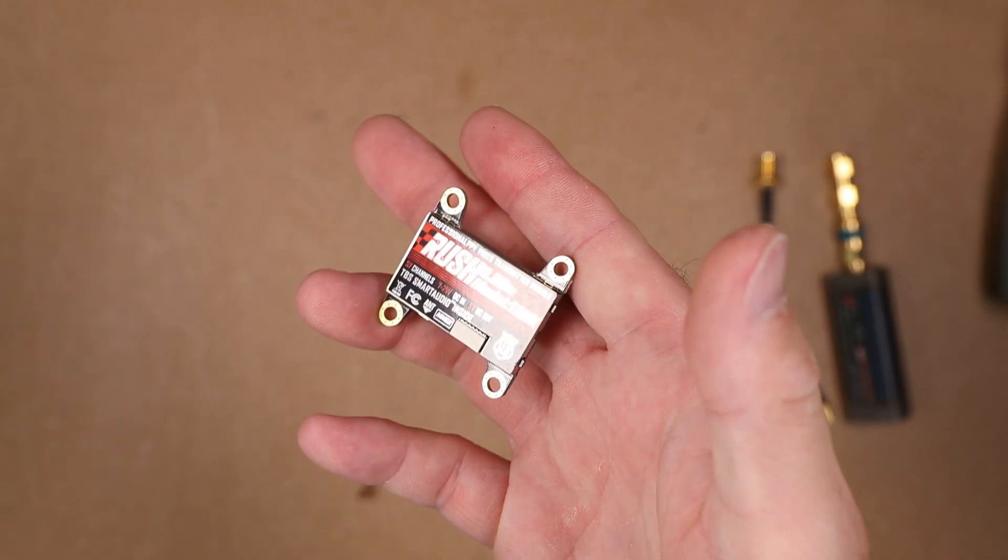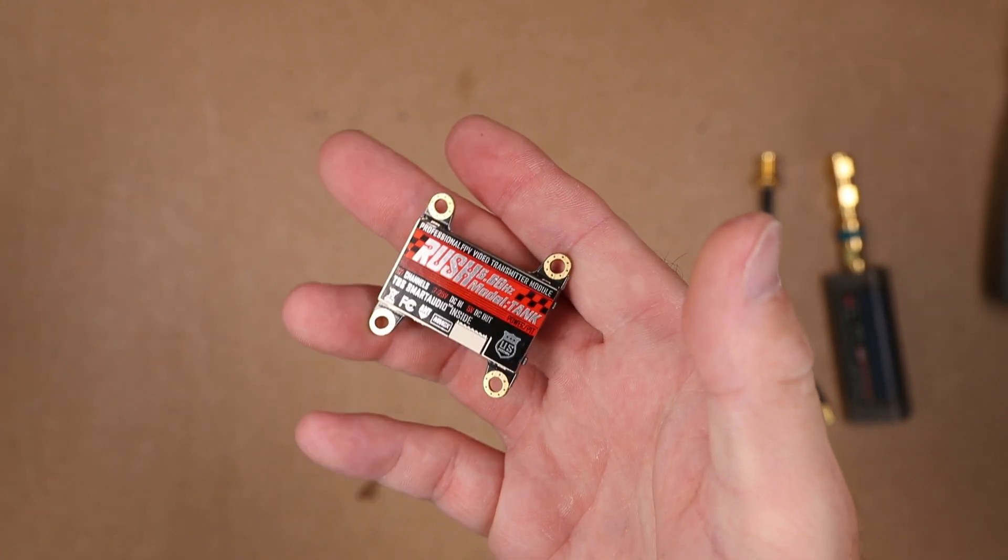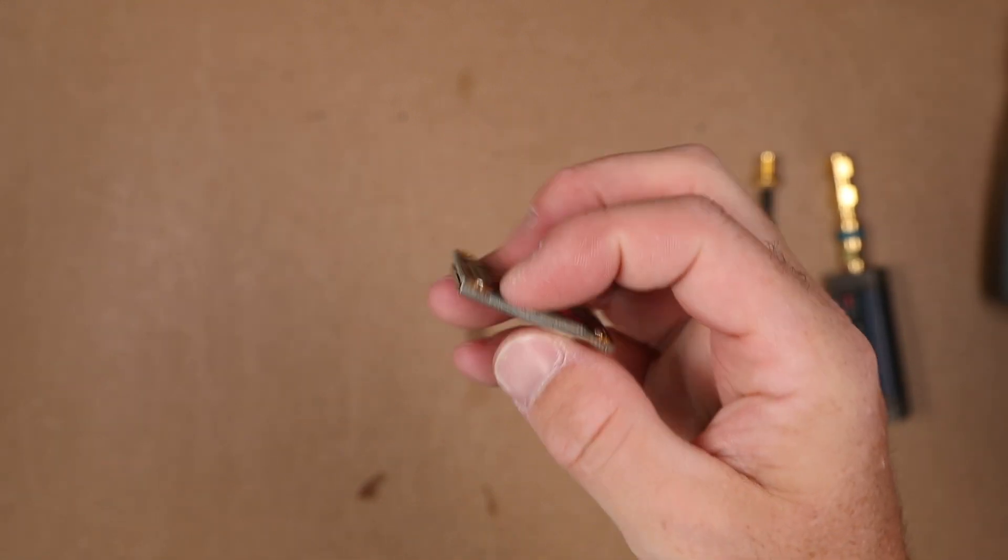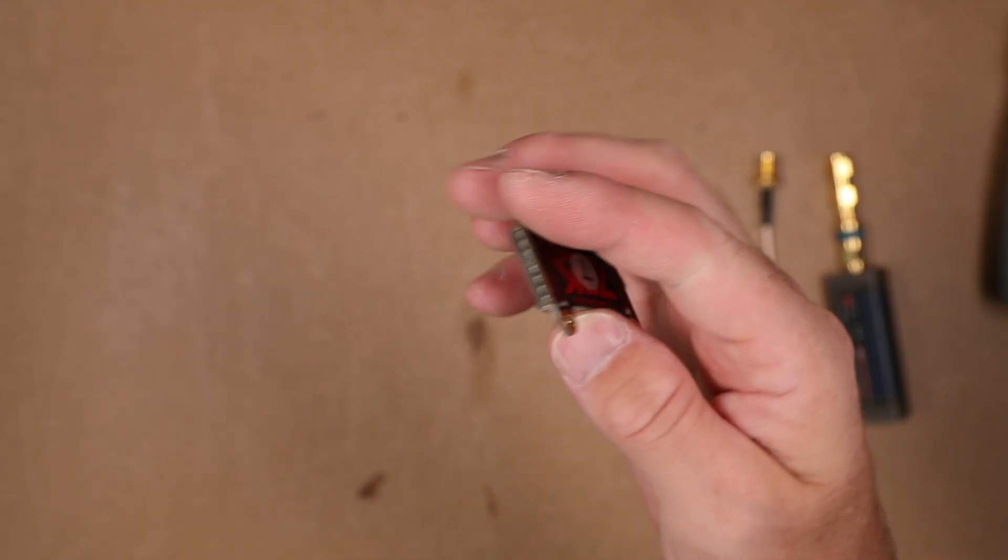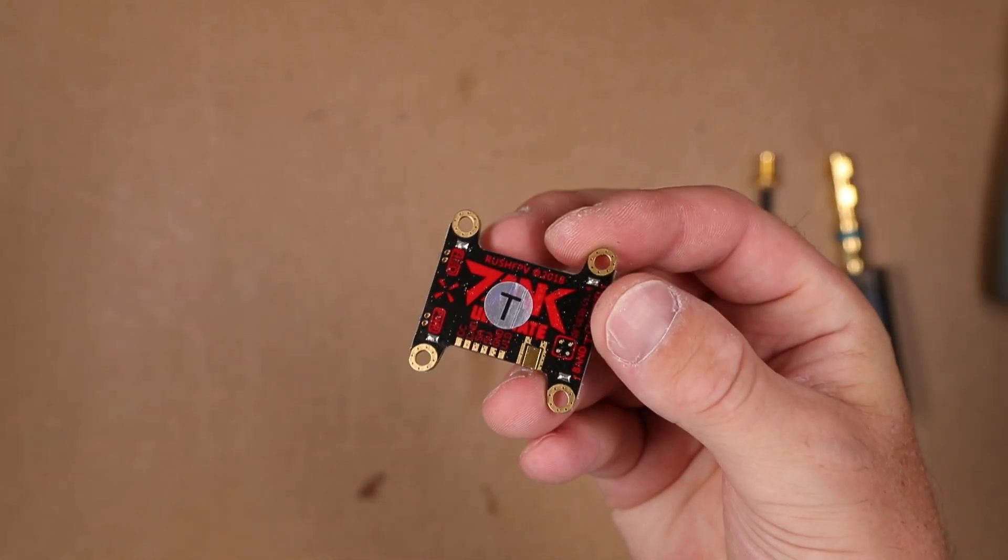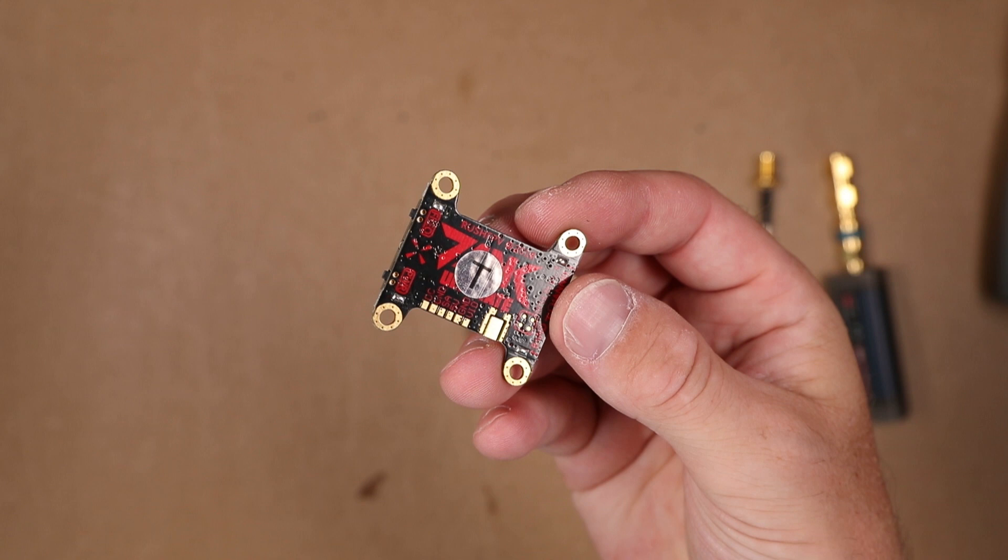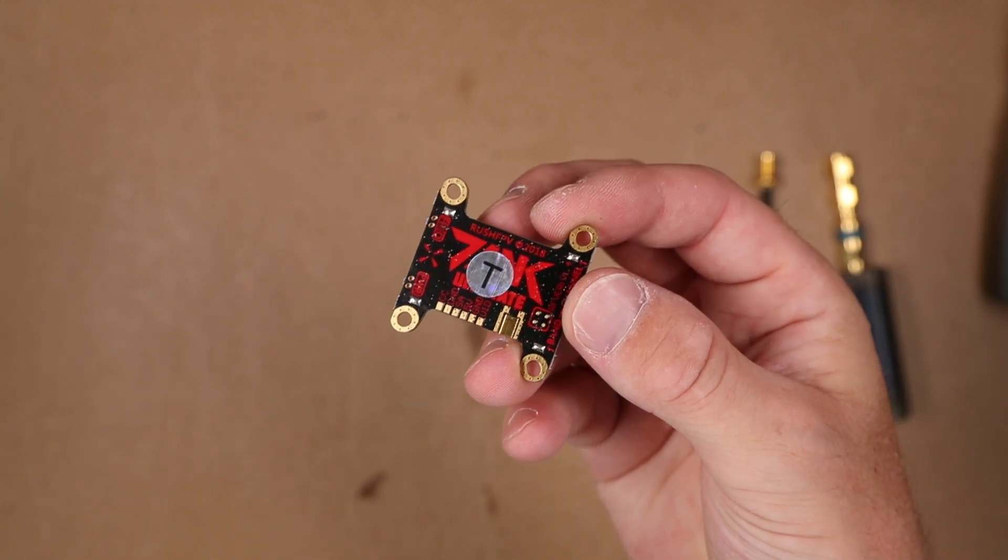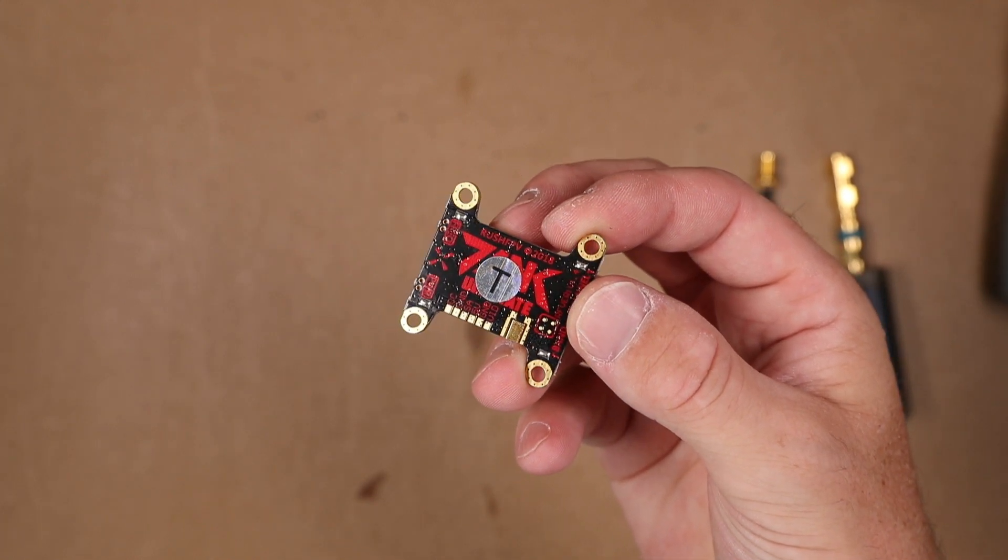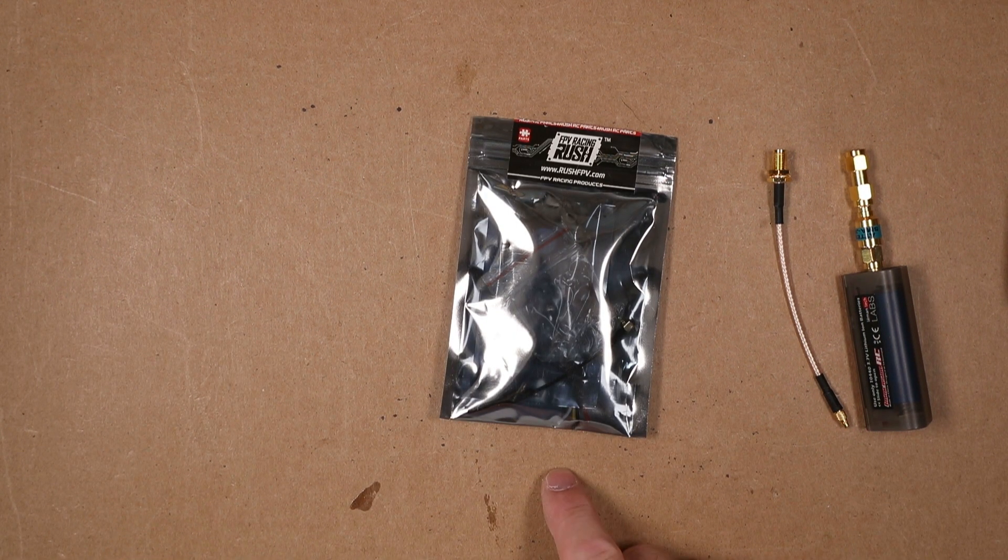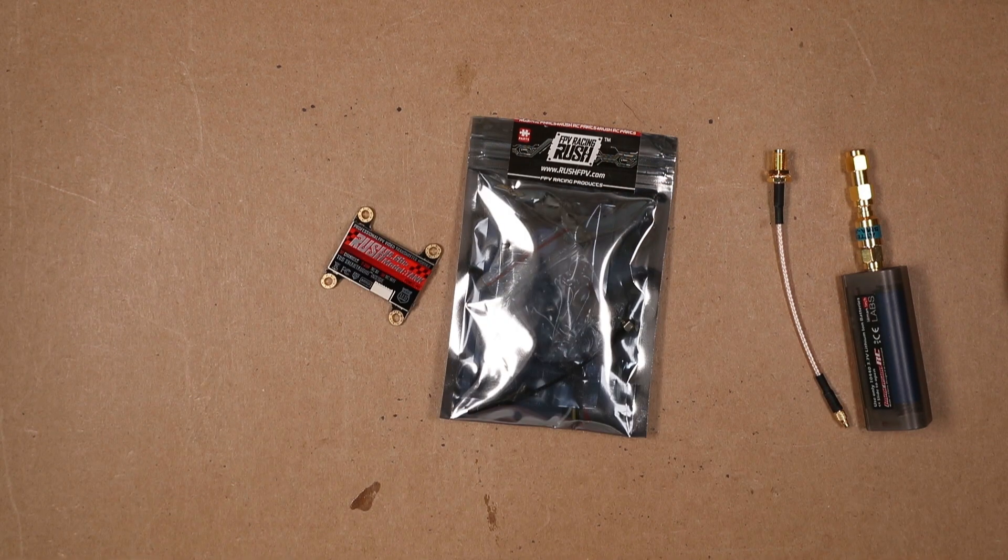Many of us have already seen the 800 milliwatt Rush Tank, a 30 by 30 VTX capable of outputting 800 milliwatts. But Rush just managed to shrink it down and keep the output power, introducing the Rush Tank Minute. Does this thing really output? This one does.